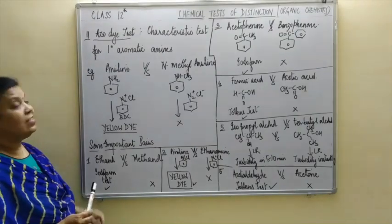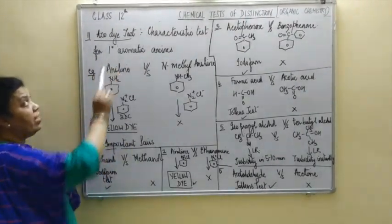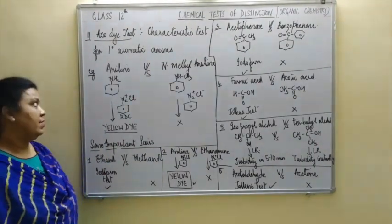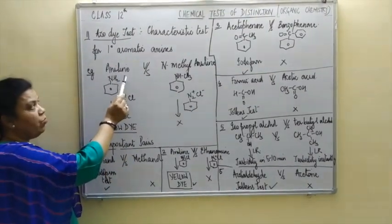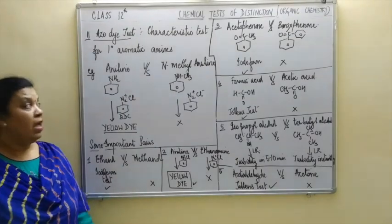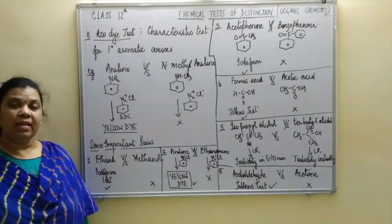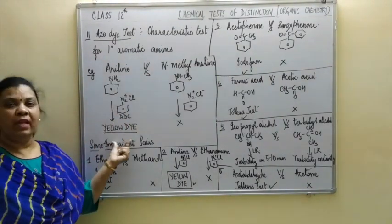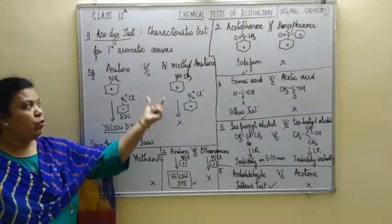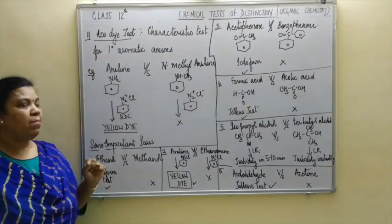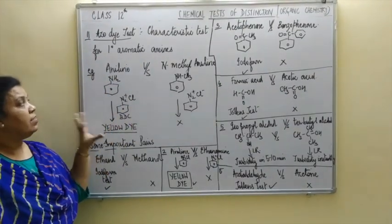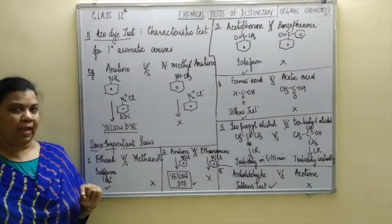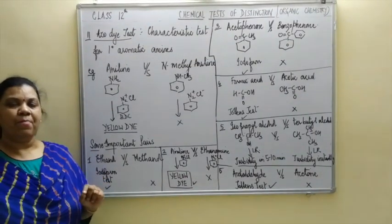Let us now conclude with the last chemical test of distinction, and the name of the test is the azo dye test. It is a characteristic test for primary aromatic amines. For example, to distinguish between aniline versus N-methylaniline: aniline is a primary aromatic amine, N-methylaniline is a secondary amine. When you add benzene diazonium chloride (BDC) to aniline, you will get a yellow dye formed, but no such observation in case of N-methylaniline. The azo dye test is actually a combination of two steps: diazotization followed by coupling. It is the exclusive test of primary aromatic amines.